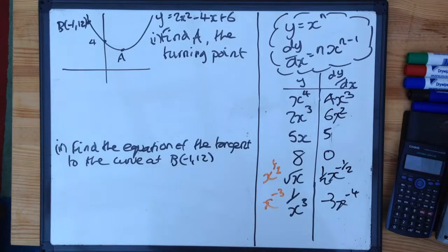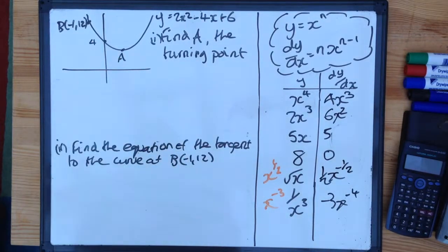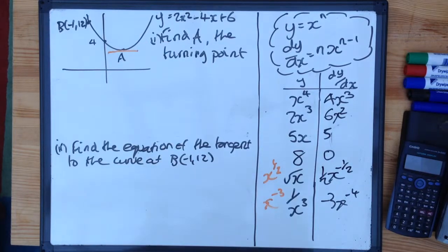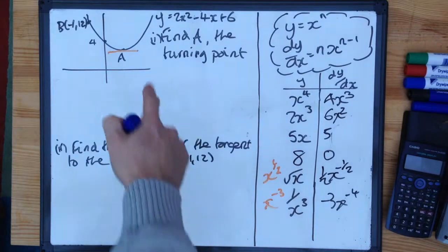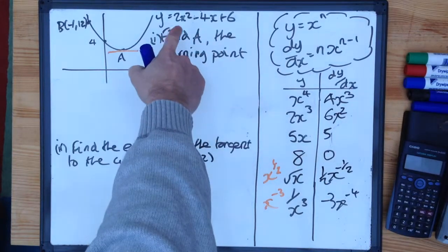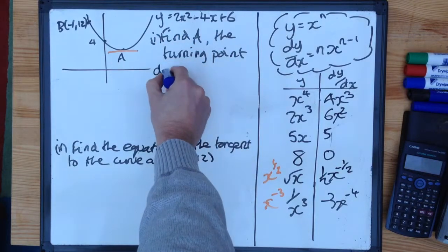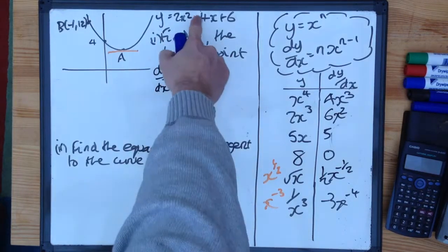Applying it to a question like this, okay, find the turning point. This is the turning point. Well, at the turning point there, the gradient is equal to 0. So if I can find dy/dx, make it equal to 0, I've got what I want. Looking at my function here, if y is equal to 2x squared minus 4x plus 6, if I differentiate that, I get the following.